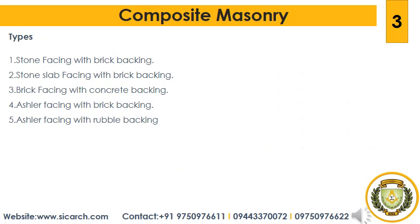There are six types of composite masonry: first, stone facing with brick backing; second, stone slab facing with brick backing; third, brick facing with concrete backing; fourth, ashlar facing with brick backing; fifth, ashlar facing with rubble backing; and sixth, reinforced brick masonry. We will now see all six types in detail.